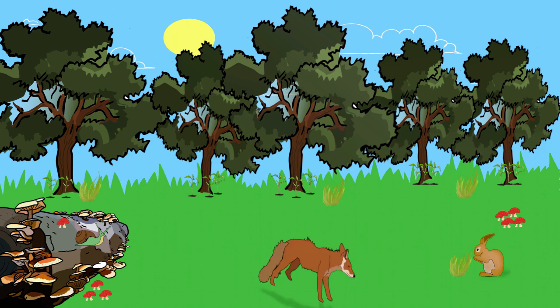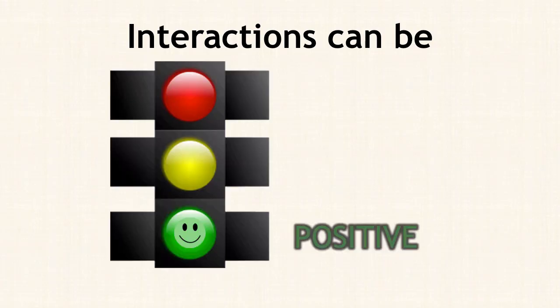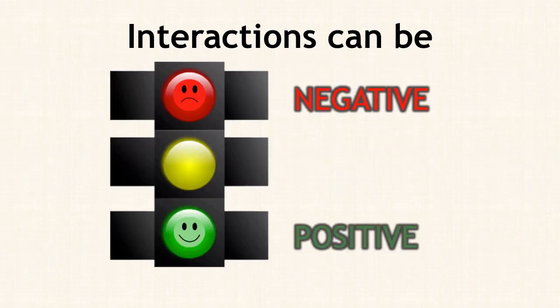All species in a community will interact or affect each other in different ways, and interactions can be positive, negative, or neutral.